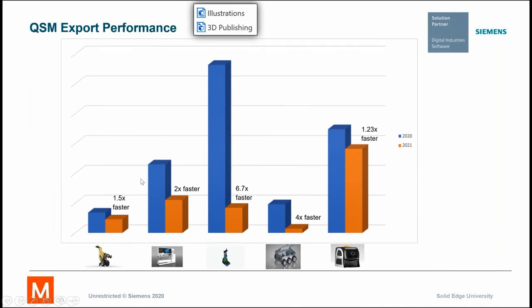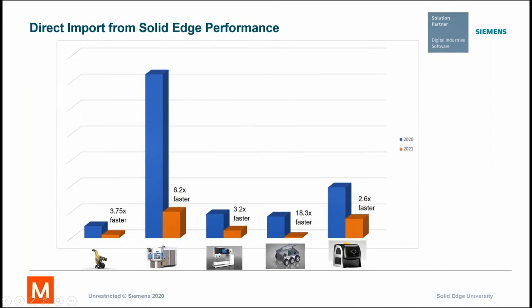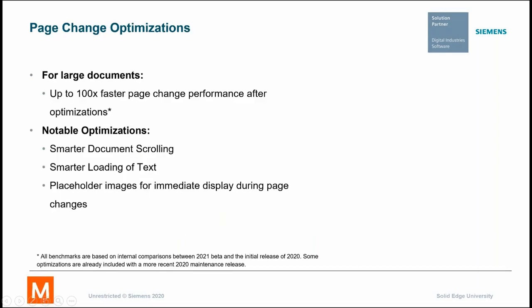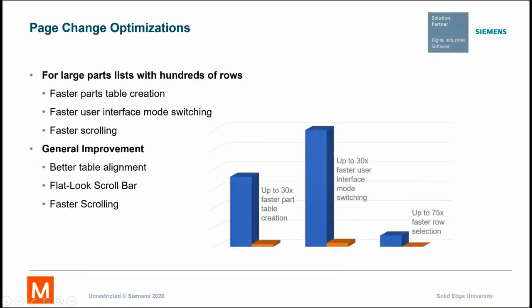The blue represents previous versions of technical pubs and the orange illustrates that file sizes of some pretty big assemblies come in much, much faster into tech pubs from Solid Edge, both from a direct import or from file open. For instance, changing pages from one page to the next in your storyboard is just much, much faster. Large parts, especially when there are rows and rows of bill of material in metadata fields, are much faster than they were.